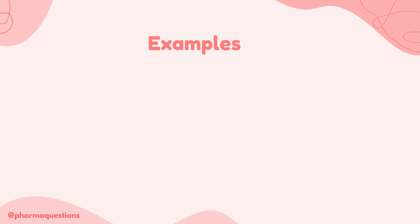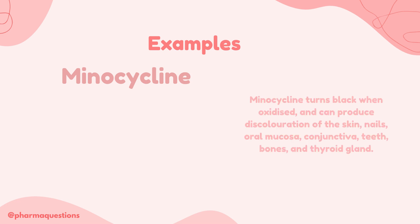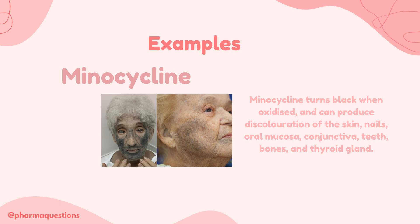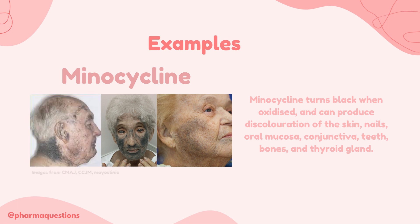We'll now take a look at some visual examples of tetracyclines and the effects they can cause. First up we have minocycline, which turns black when oxidised and can produce discolouration of the skin, the nails, the conjunctiva, the teeth, the bones and the thyroid gland, as you can see from the images. This pigmentation can often be irreversible in nature.